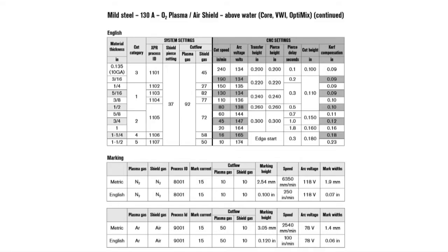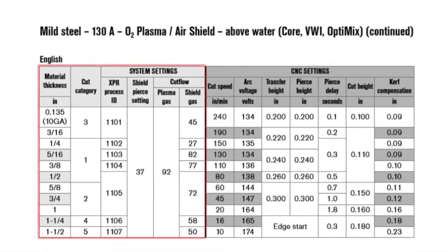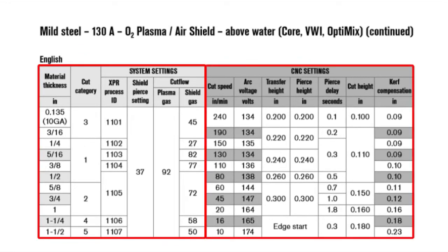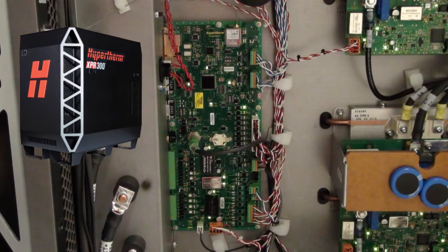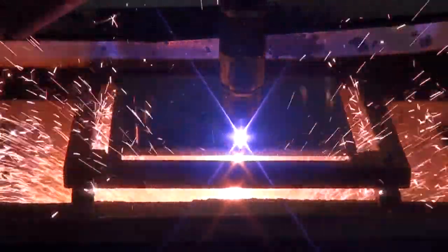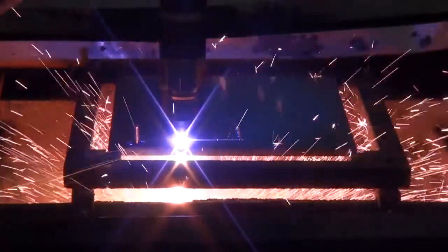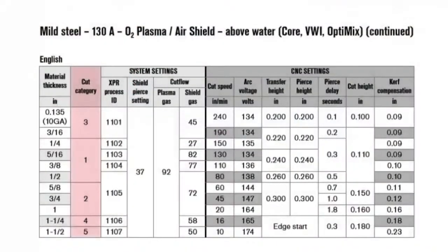The XPR cut chart is divided into two areas: system settings and CNC settings. System settings are the parameters related to the XPR and include material thickness, cut category, and the XPR process ID. The XPR process ID is a unique process identification number that aligns with a specific set of pre-programmed values from the cut chart database in the plasma supply memory. These values automatically apply the optimized settings recommended for the process. Cut category will be discussed in detail later in this video.